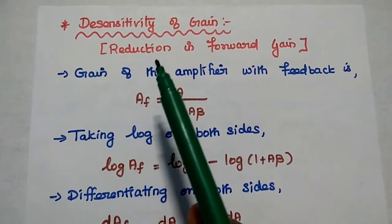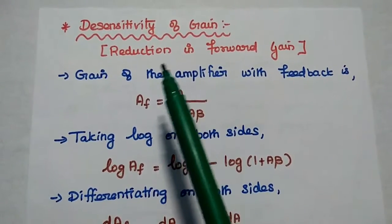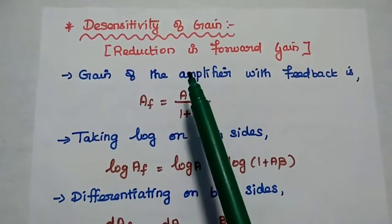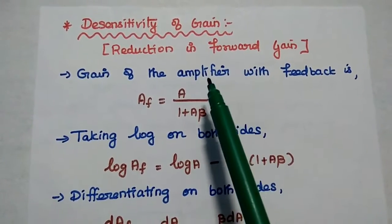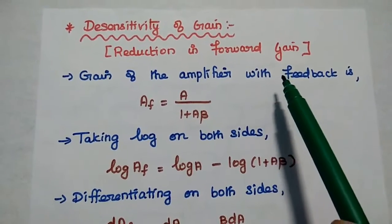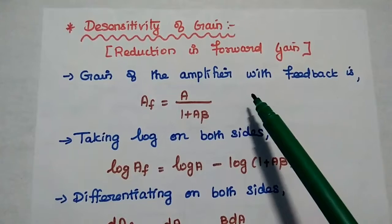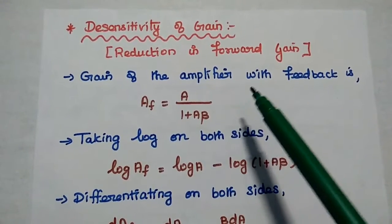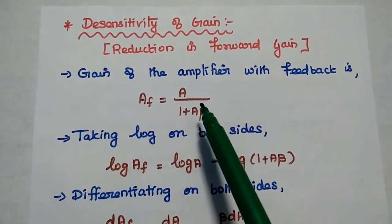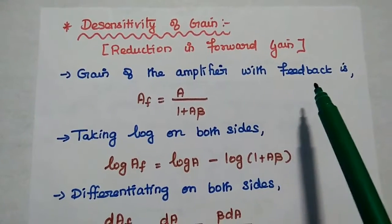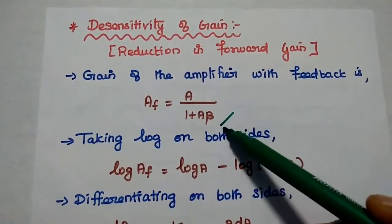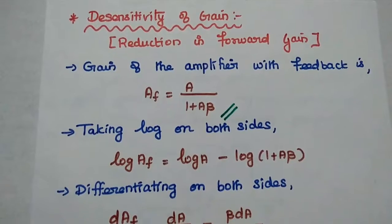The next property is desensitivity of gain, or reduction in forward gain. Here we discuss how much gain is reduced due to negative feedback — that is, the effect of feedback on the gain of the amplifier. We consider the gain of the amplifier with feedback: Af equals A divided by 1 plus A·beta, which is the general formula of negative feedback.